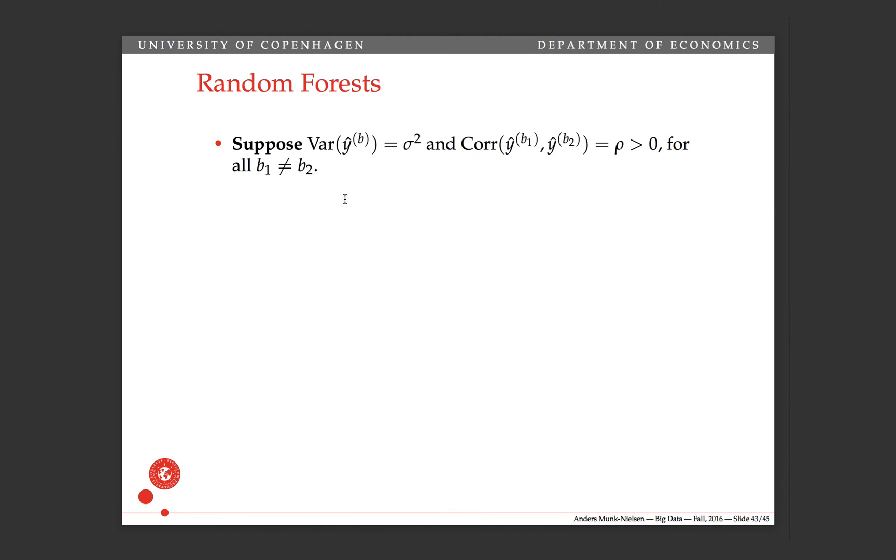Let's suppose that the variance of y hat is sigma squared and the correlation between two different trees for different bootstrap samples is rho and that rho is positive.